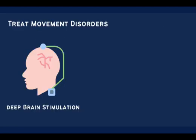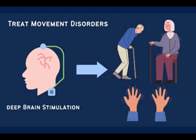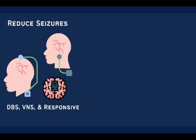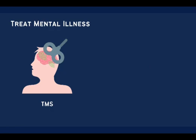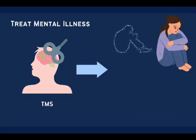Beyond pain, neuromodulation can treat movement disorders. DBS is used to treat Parkinson's disease, essential tremor, and spasticity. DBS, VNS, and RNS have also been used to reduce seizures in patients with drug-resistant epilepsy. TMS may be used as a treatment for patients with refractory depression or addiction.